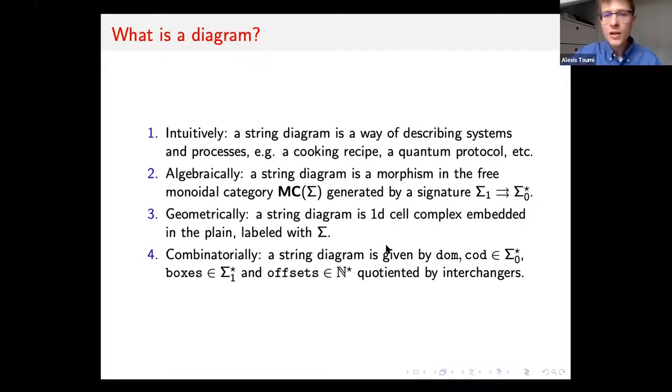So what is a diagram? Intuitively, a diagram is a way of describing systems and processes. You can take it as an intuitive syntax for describing processes like a cooking recipe or like a quantum protocol. Essentially, you don't necessarily need to know the maths behind it to use them.